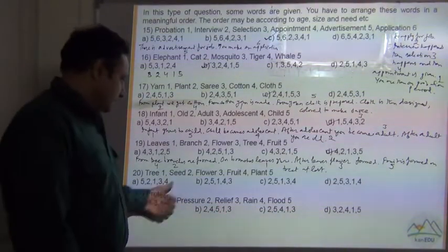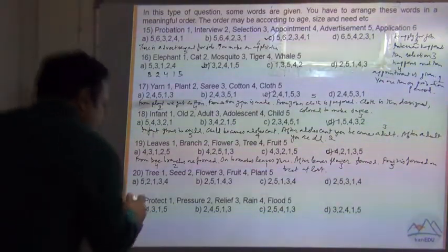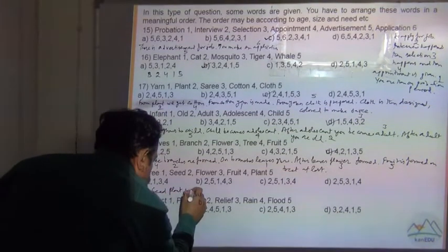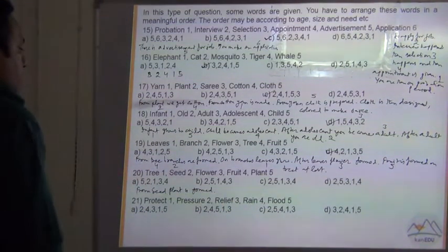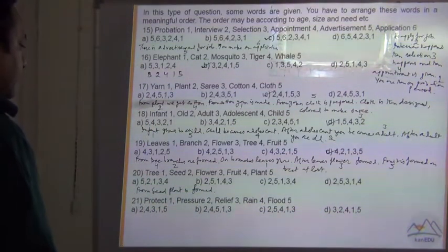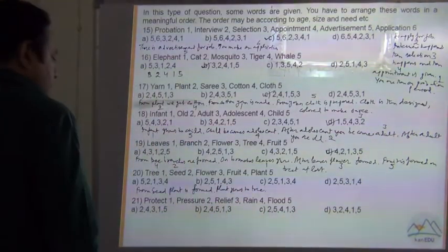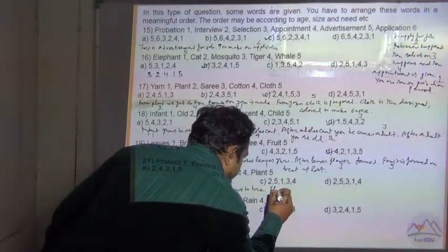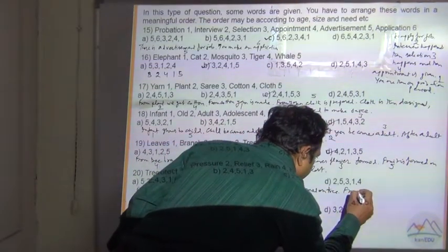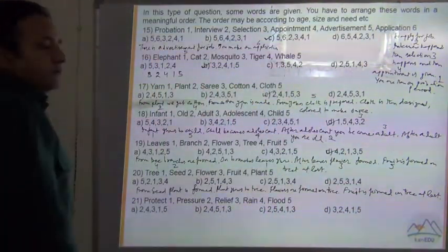So definitely from seed. Seed is the starting point from where we get the roots. From seed we get the plant, so from seed plant is formed. And the plant grows to tree. Then flowers are formed on tree. Fruit is formed on tree at last, or at the end you get the fruit on the tree.